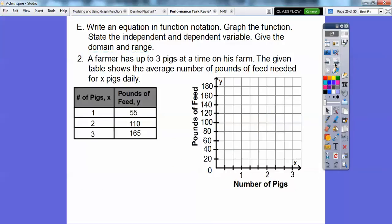Okay, all right, so I think we're done with that one right there. Let's do the same with this one here. A farmer has up to 3 pigs at a time on his farm. The given table shows the average number of pounds of feed needed for x pigs daily. Okay, so for 1 pig, they need 55 pounds. For 2 pigs, they need 110 pounds. Can you see that's just 55 and 55 right there? 3 pigs, if we did another 55, is 165. So a function would be f(x) equals 55x, where x is the number of pigs right there.